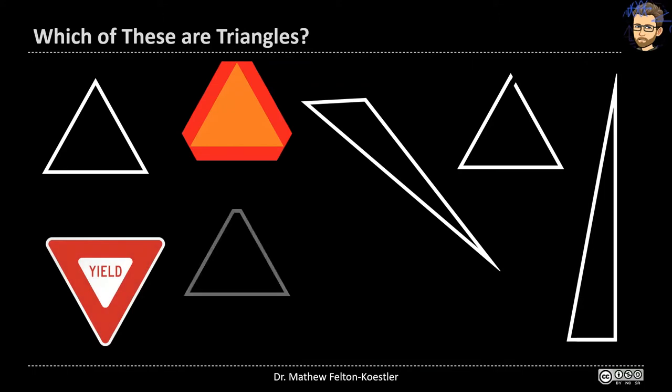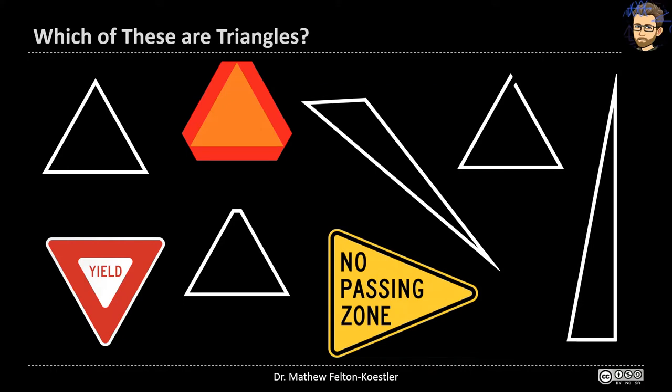Or a yield sign? Or this triangle with just the tip cut off? Or a no passing zone sign? Which of these are triangles? How do you know?